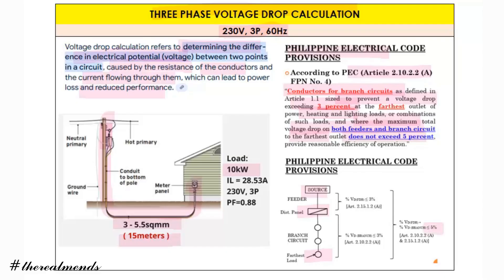So this is critical in your design: from source to distribution panel you can use 2 percent, and then from the branch circuit you have 3 percent, so 3 plus 2 equals 5 percent total. Or you can reverse it — 3 percent on the feeder and 2 percent on the branch circuit.